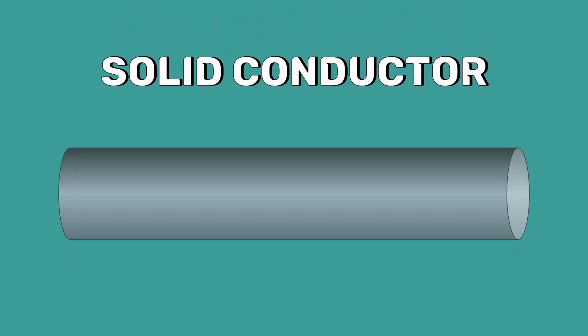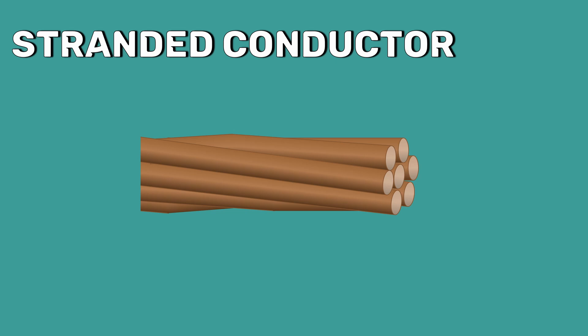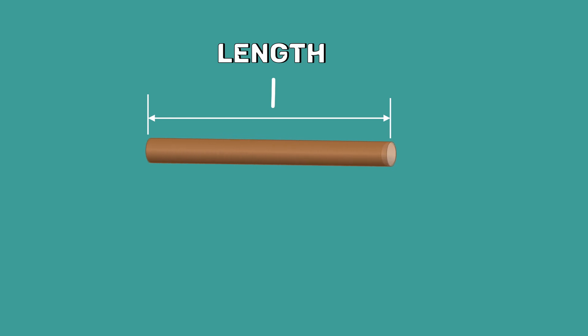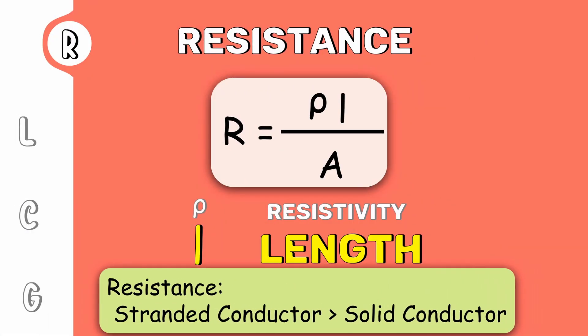Instead of a single solid conductor, we use a stranded conductor in transmission lines. For stranded conductors, alternate layers of strands spiral in opposite directions. Spiraling makes the strands one or two percent longer than the actual conductor length. Therefore, the resistance of the stranded conductor is slightly more than the solid conductor of an equivalent cross-sectional area.